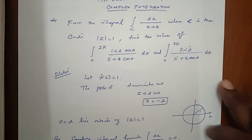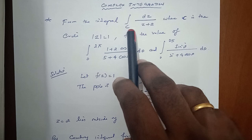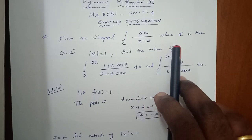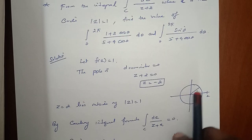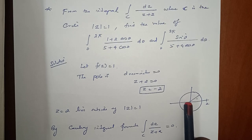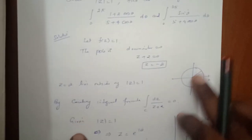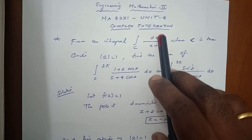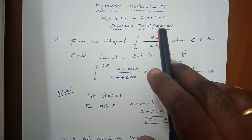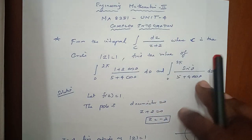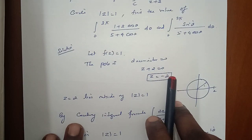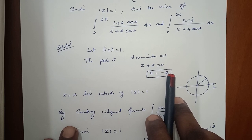This is the statement of the problem. In this problem, the integral over a closed curve is dz/(z + 2), where C is the circle with modulus of z equal to 1, meaning the radius value is 1. We need to find two integrals. The numerator can be taken as f(z)/(z − a), which is the Cauchy integral formula. Here f(z) = 1. To find the pole, set the denominator equal to zero: z + 2 = 0, so z = −2 is the pole value.